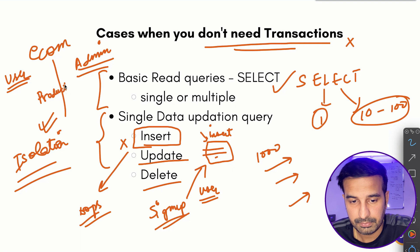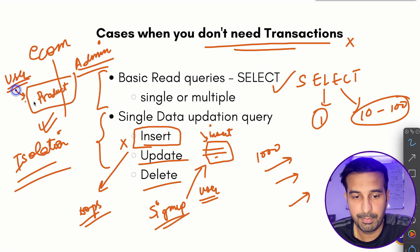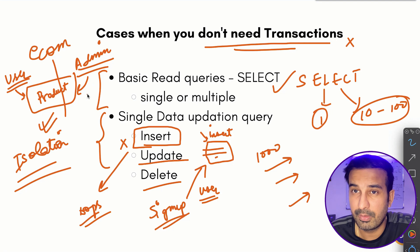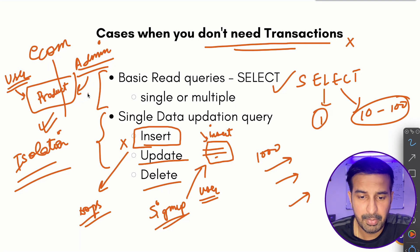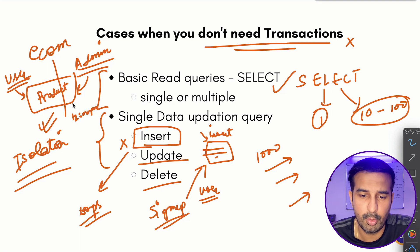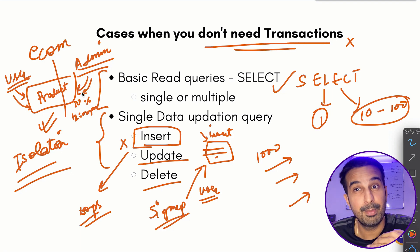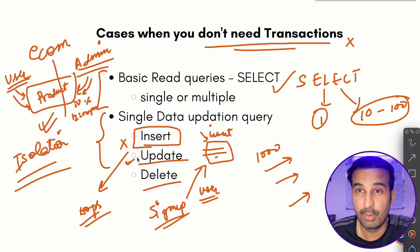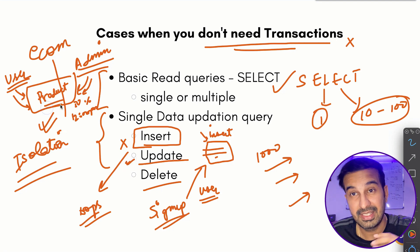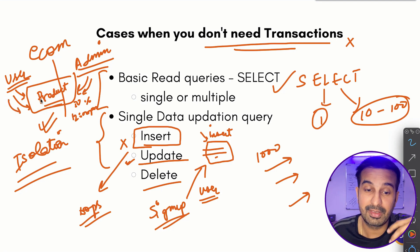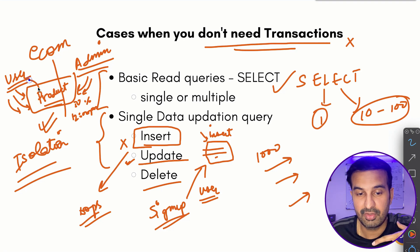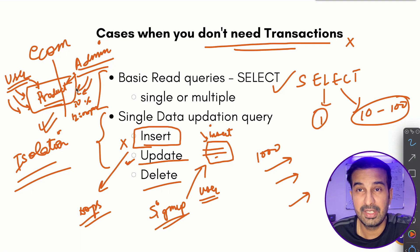Say a product is available and a user can purchase it, while the admin can update the pricing — for example, offering a 50% discount after 12 PM. If the user is also interacting with the same record that the admin is updating, even a single update is affecting the state of an entity being accessed by someone else.